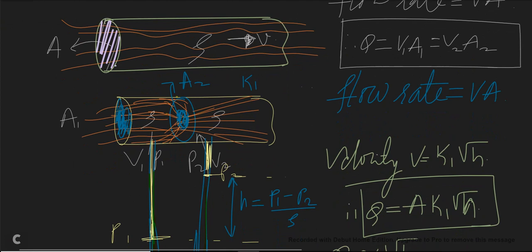Consider an obstruction placed in the pipe, which is an orifice plate. This orifice plate has a very small opening in the center, allowing fluid to flow through it, while the rest of the area blocks the flow. The fluid flows from one end toward the plate, and upon seeing the obstruction, its velocity reduces on the upstream side. Through the small opening, the fluid exits with very high velocity.